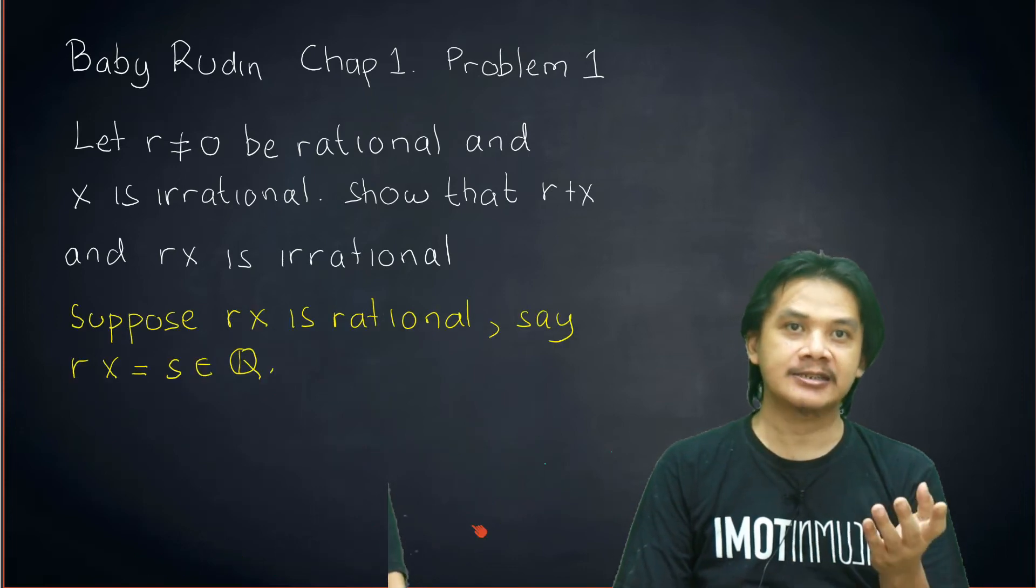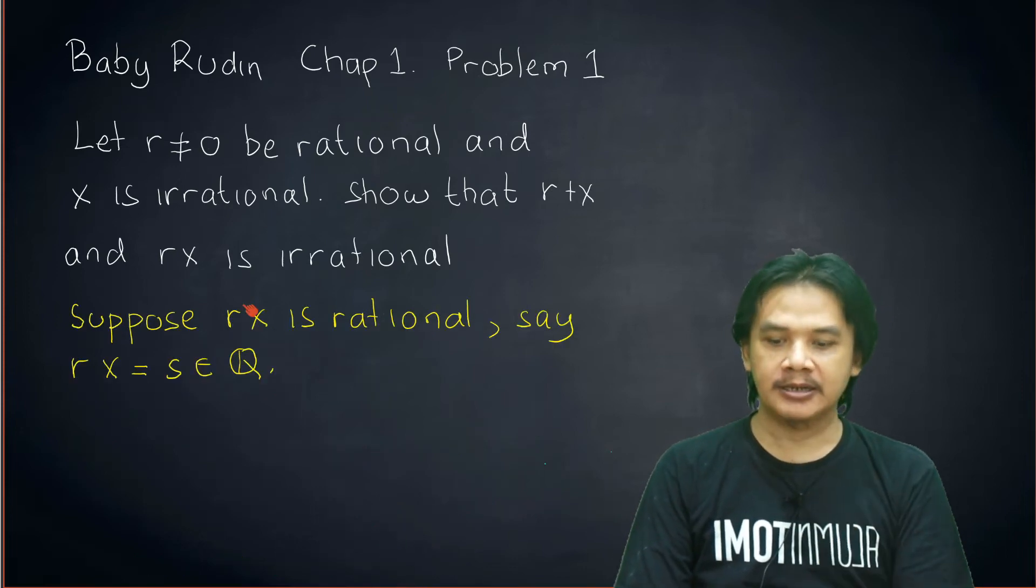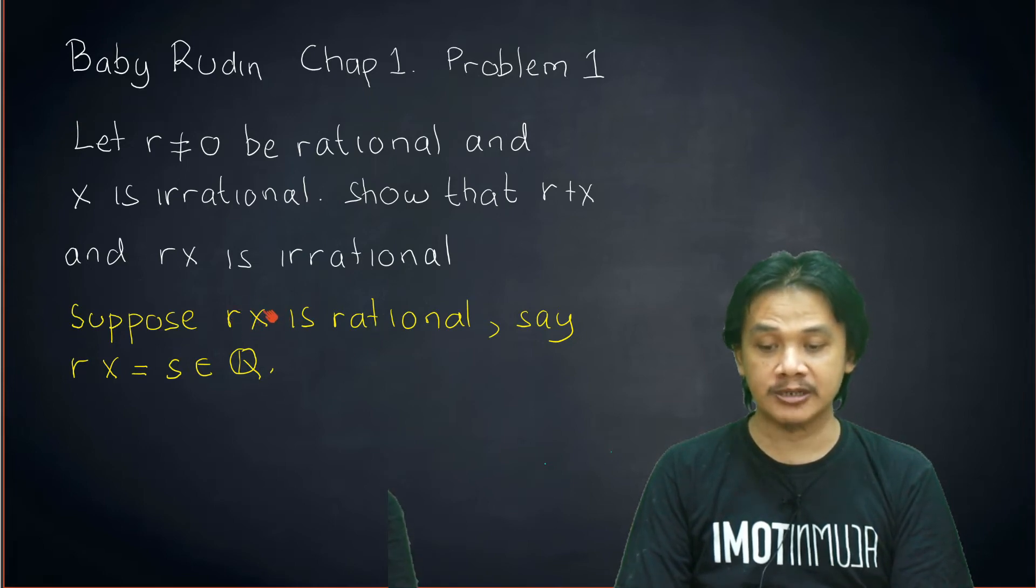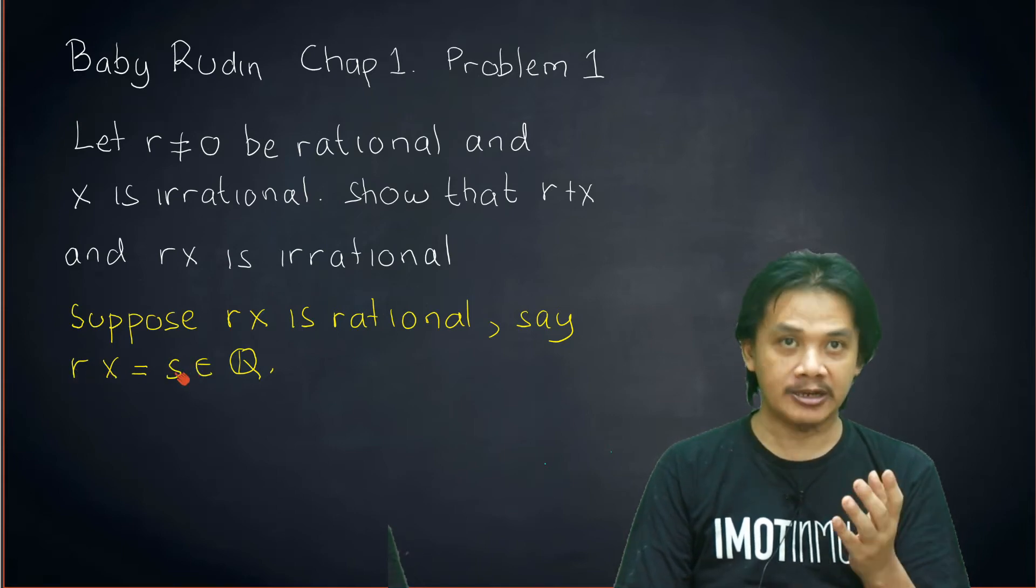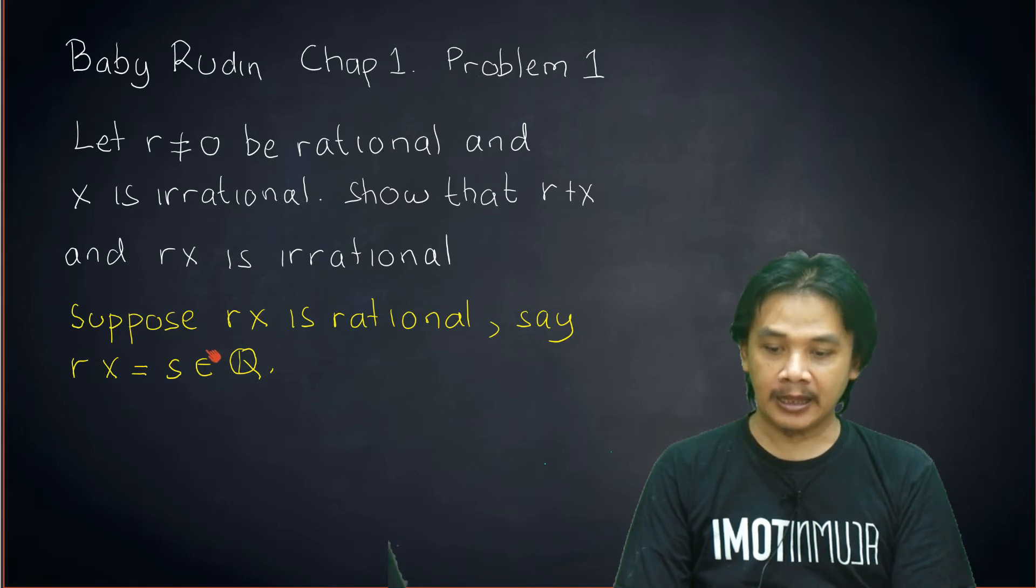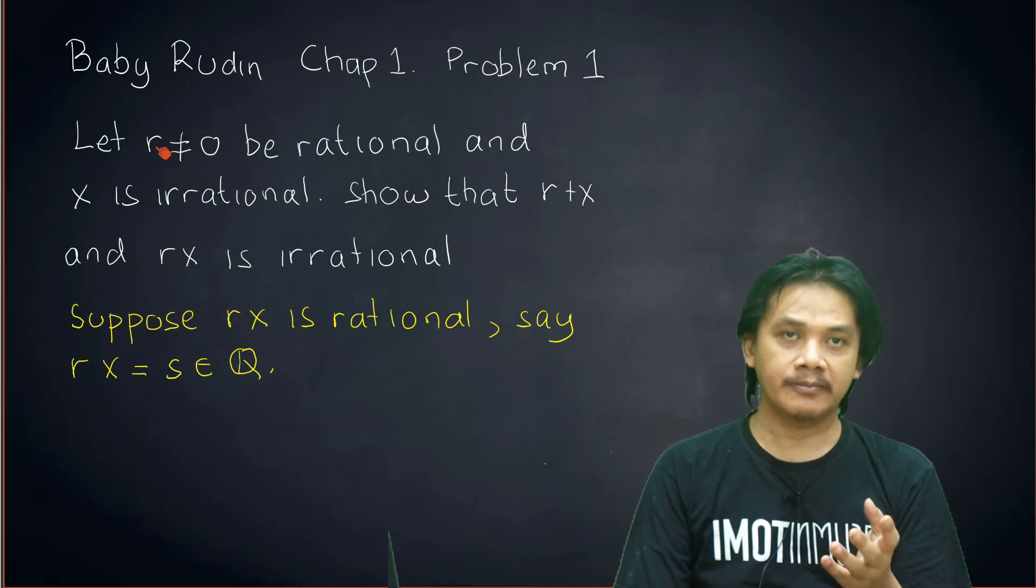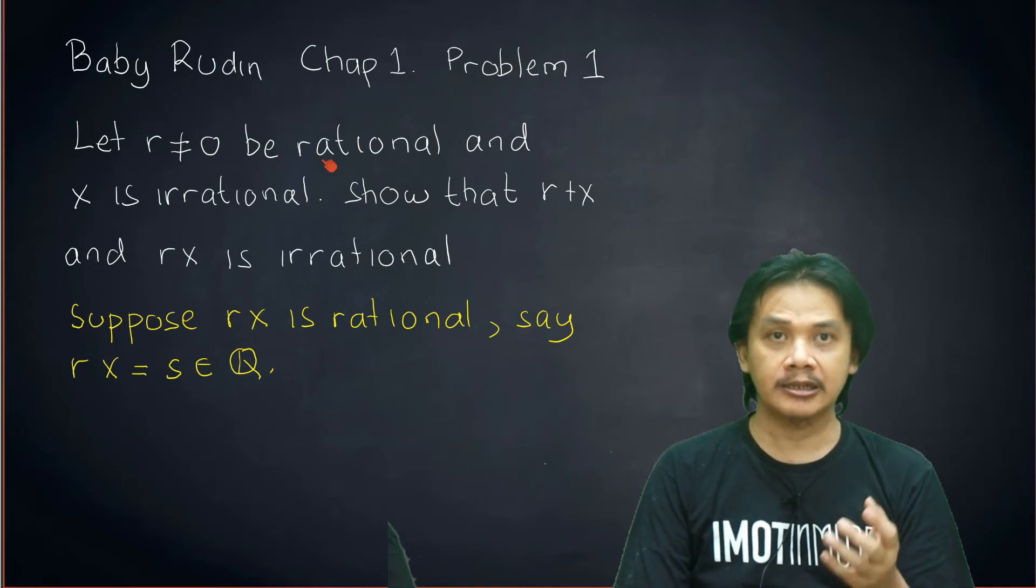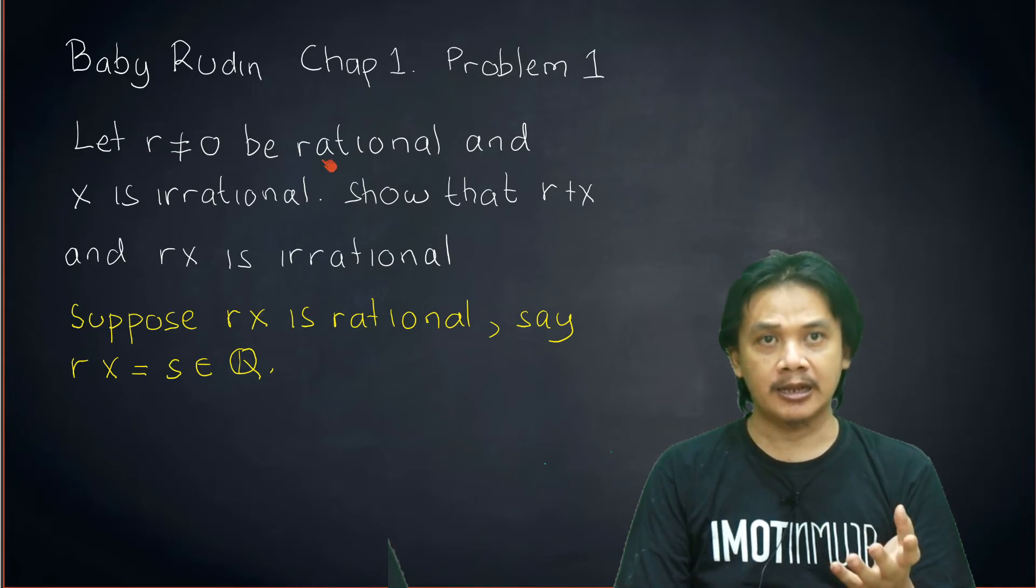Okay, let's discuss the second part. So similar to what we did earlier, we suppose on the contrary that r×x is rational, and we give a name to this r×x. Say that r×x equals s, which is a rational number. Now recall that r is not equal to 0, and r is in the rational number field.